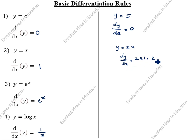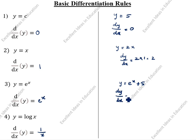We will take the example y = e^x + 5. We write dy/dx. The differentiation of e^x + 5: e^x differentiation is e^x, plus 5 — 5 is a constant term, so differentiation is 0. What is the answer? e^x is the answer.